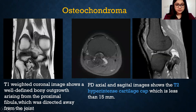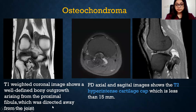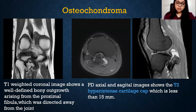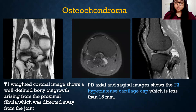Osteochondroma: the patient presented with localized swelling without restriction of movement. Imaging showed a well-defined bony outgrowth arising from the proximal fibula, directed away from the joint. PD and STIR images showed a T2 hyperintense cartilage cap that was less than 15 mm. MRI is very important to evaluate the cartilage cap for malignant transformation — if the cartilage cap exceeds 15 mm in adults or 30 mm in children, it suggests malignant transformation, most commonly chondrosarcoma. This patient also had concomitant features of lumbar sciatica.